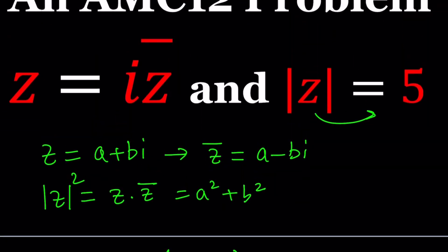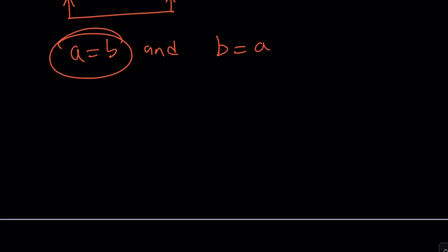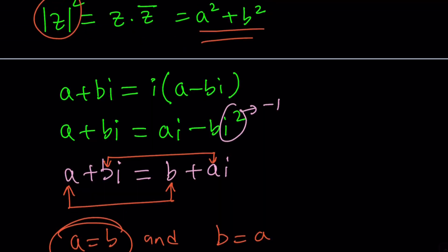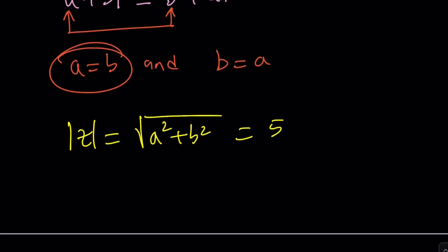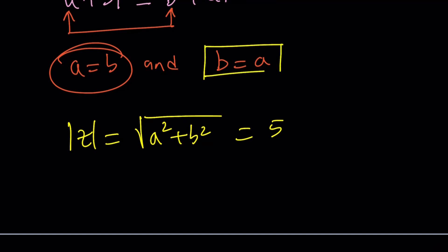This gave us a really nice relationship: a and b are equal. Now we're going to work on the second equation. Absolute value of z is five. Absolute value of z is equal to square root of a squared plus b squared, which is real part squared plus imaginary part squared, and this equals five. Let's square both sides to get rid of the radical. After squaring both sides, a squared plus b squared equals 25.